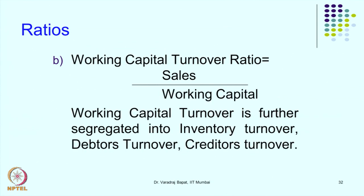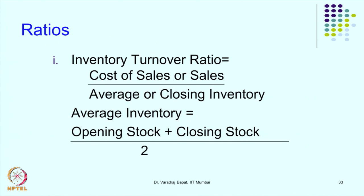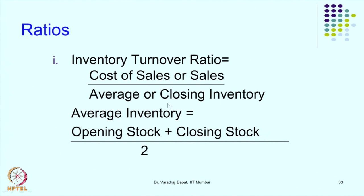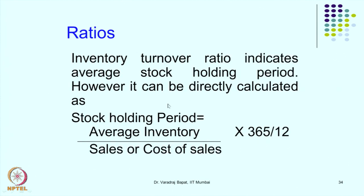The working capital turnover ratio is sales divided by working capital. For inventory turnover, we take cost of sales — because inventory is at cost — divided by average inventory, giving a better ratio. This ratio can also be represented in terms of number of days, in which case it is called the stock holding period: average inventory divided by cost of sales, multiplied by 365 days or by 12 if you want it in months.